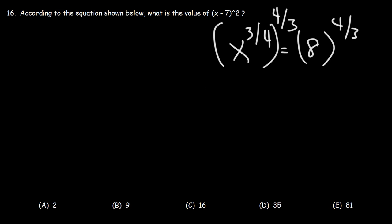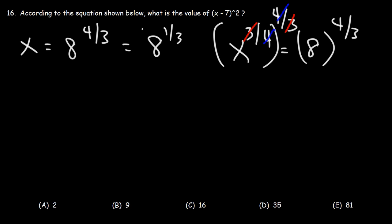On the left side we can see that the 3s will cancel and the 4s will cancel. So x is equal to 8 raised to the 4 over 3. What is 8 raised to the 4 over 3? What we need to do is separate the 4 and 3. We can say this is 8 raised to the 1 third, raised to the 4th power.